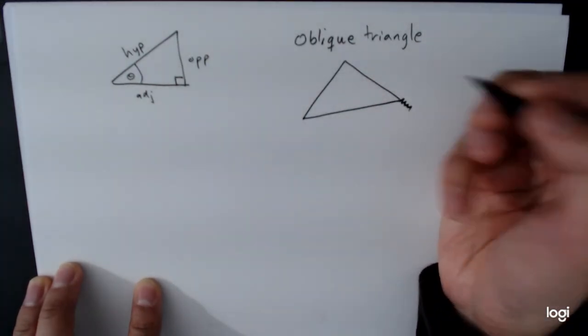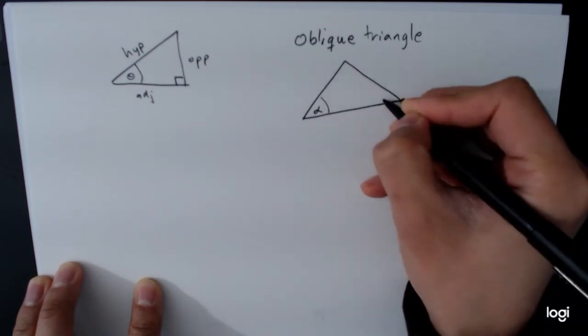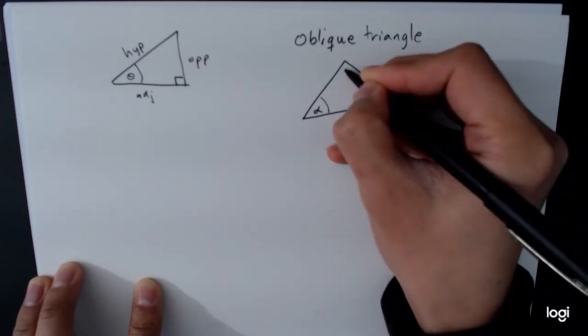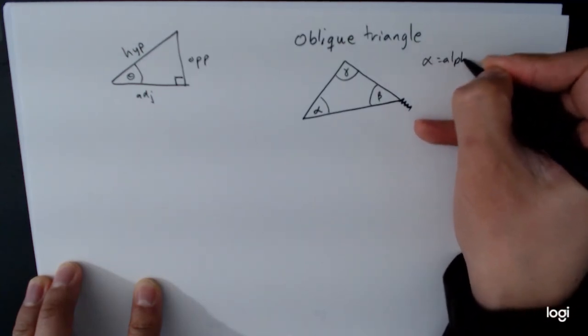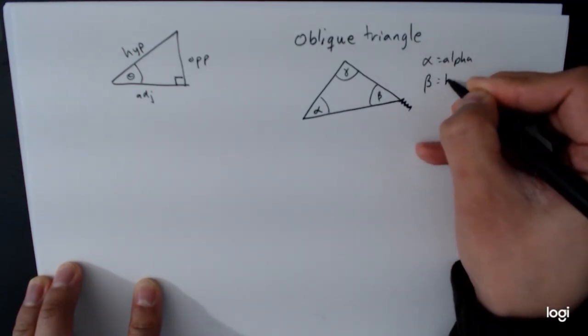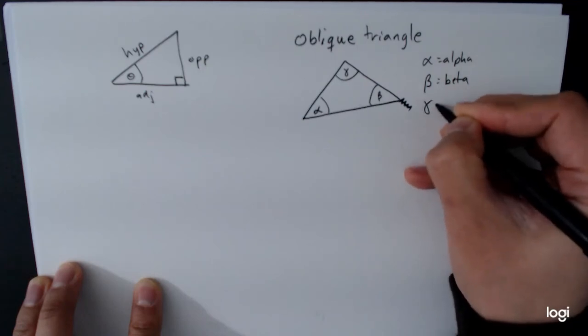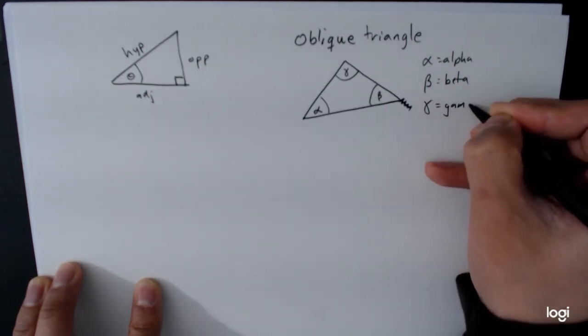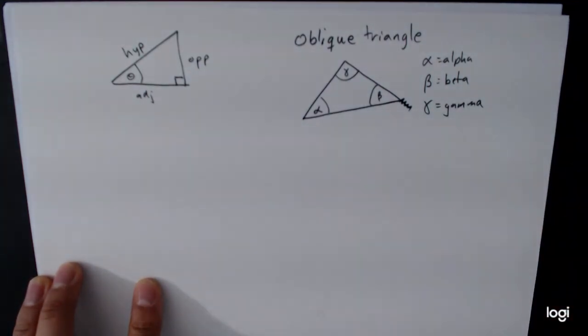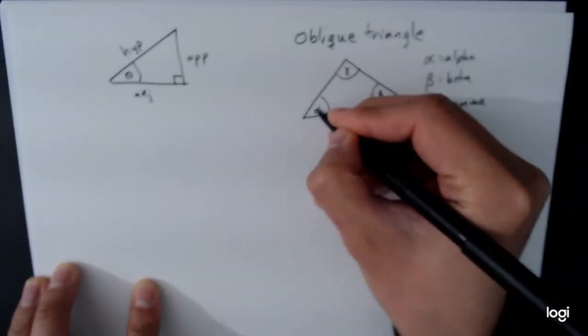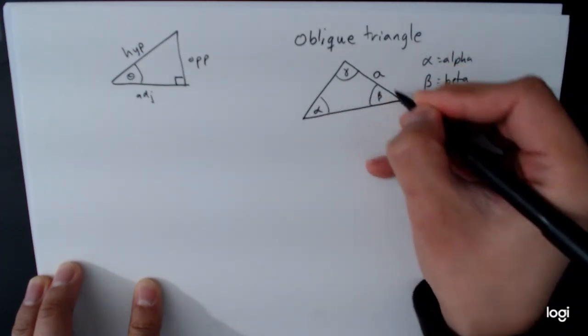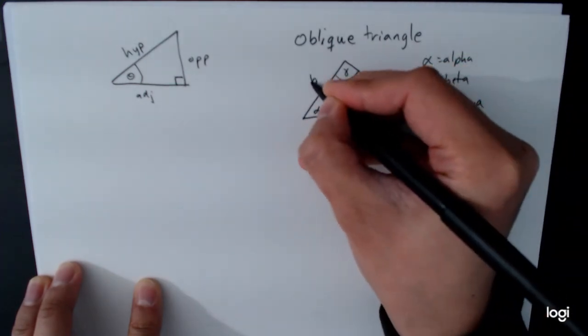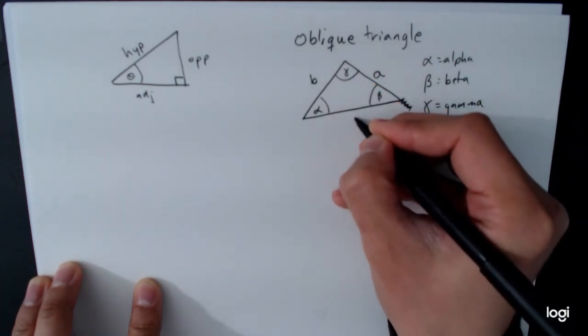The conventional notation is to use Greek letters for the angles. So alpha, beta, gamma. So I'll write this down. Alpha, beta, and gamma. These are the first three letters of the Greek alphabet. And then we use regular Latin letters to label the sides. And so we always label the side opposite with a corresponding symbol. So if this is alpha, then over here is A. If this is beta, over here is B. If this is gamma, over here it's C.